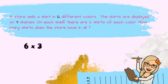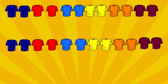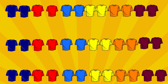What do we need to do in this problem? We know that we need to find the total amount, but do we need to add or multiply? Let's visualize the problem so that we can understand it better. Let's imagine that this is the first shelf, the second shelf, and the third shelf.